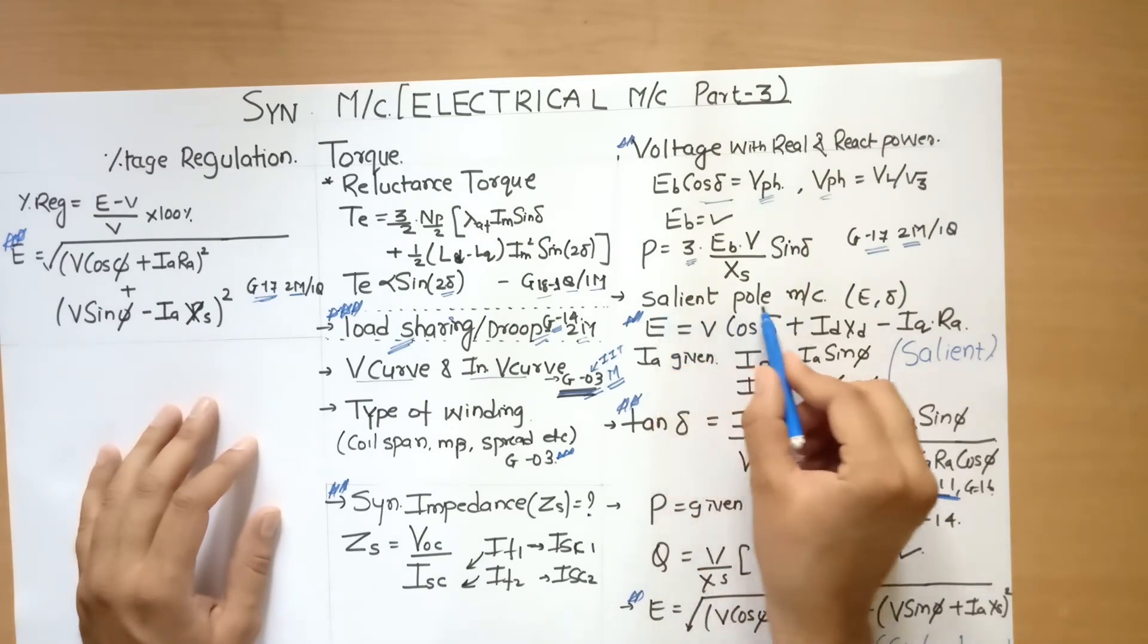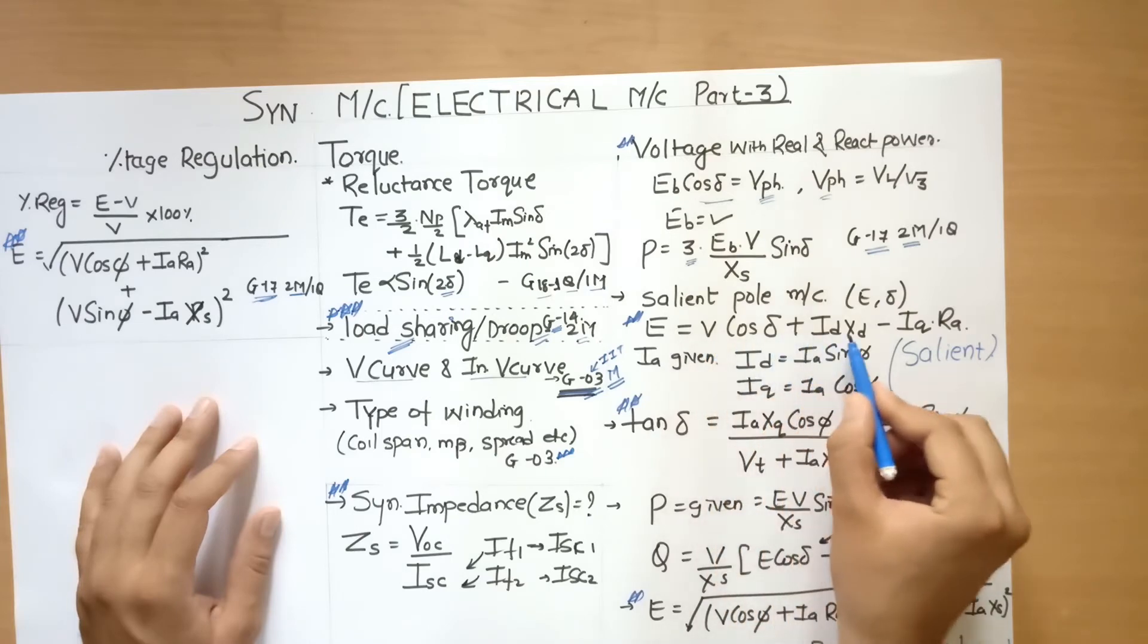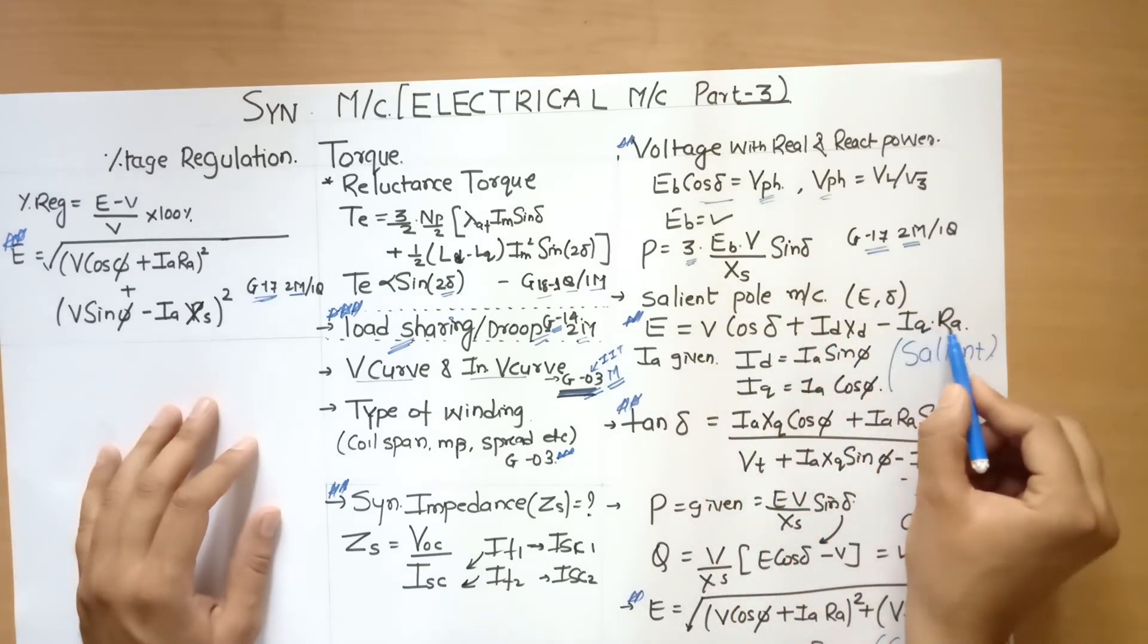Similarly, if you know salient pole alternator, then the EMF equation is given by E equal to V cos delta plus Id Xd minus Iq Ra.